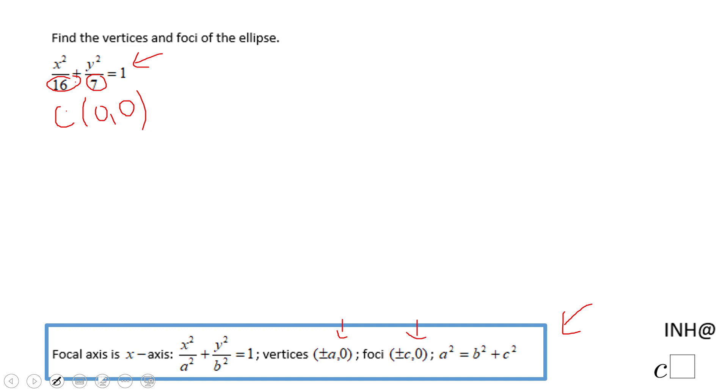And how do I find the vertices? I'm gonna take that 16 and that is a squared. And in order to find a, I'm gonna take the square root. Don't forget to put plus and minus. And that will give you plus and minus 4.